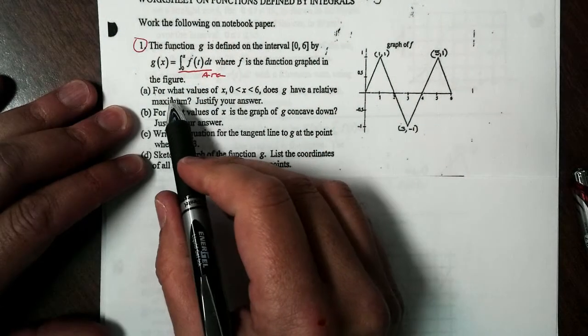So we have POIs at x equals 1, 3, and 5. And that is because, remember, we're talking about g. g double prime of x changes signs. And there's your answer. Again, you can slow this down if you like.